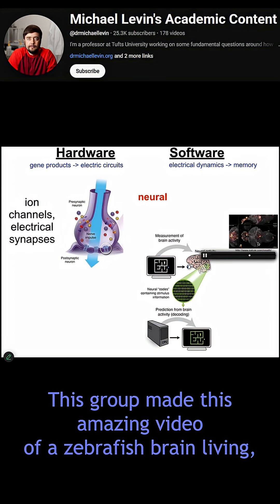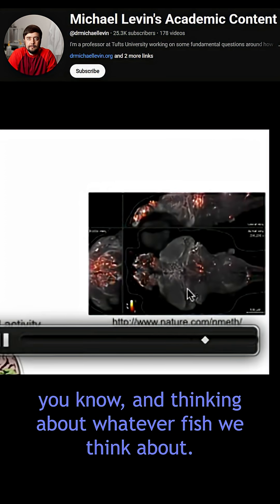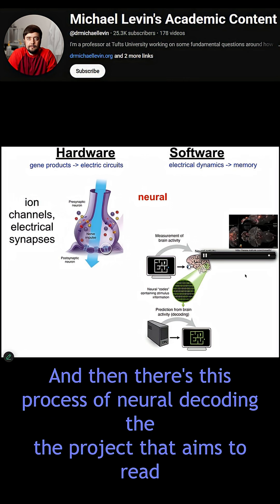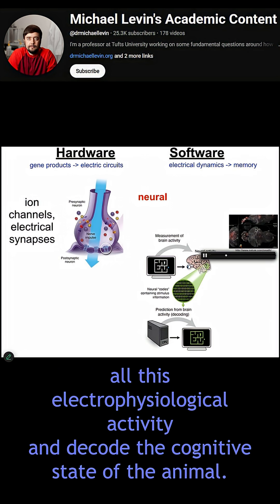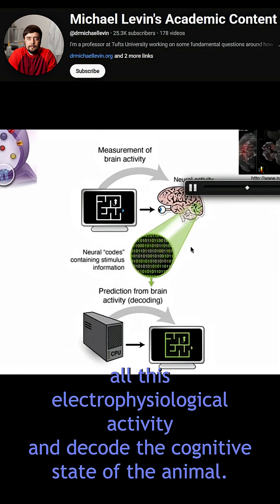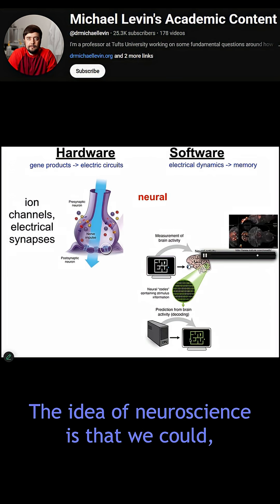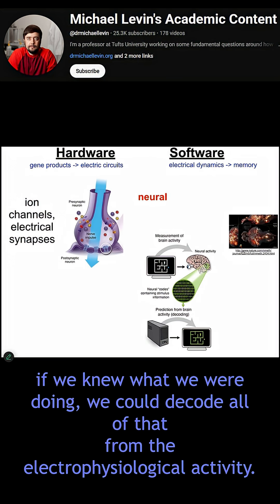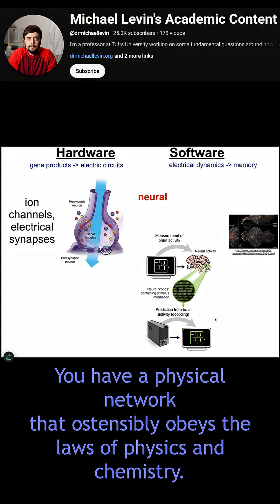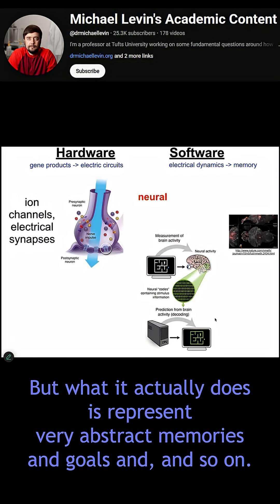This group made an amazing video of a zebrafish brain living and thinking about whatever fish think about. There's this process of neural decoding — the project that aims to read all the electrophysiological activity and decode the cognitive state of the animal: the memories, the preferences, the goals, the plans. The idea of neuroscience is that we could, if we knew what we were doing, decode all of that from the electrophysiological activity. Here you have a physical network that obeys the laws of physics and chemistry, yet actually represents very abstract memories and goals.